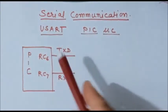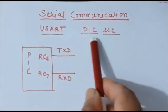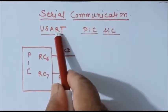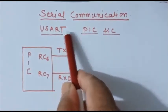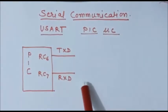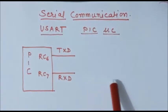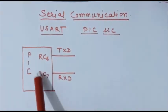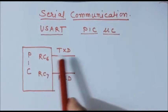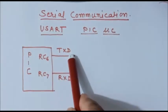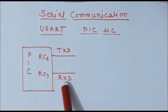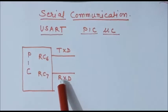Serial communication using the USART block of PIC microcontroller — the Universal Synchronous or Asynchronous Receiver Transmitter block. Using this block, we can transmit or receive data using the RS-232 protocol. In the PIC microcontroller, we will use the RC6 pin as a transmitter pin to transmit data serially, and the RC7 port pin is used as a receiver pin to receive data serially.